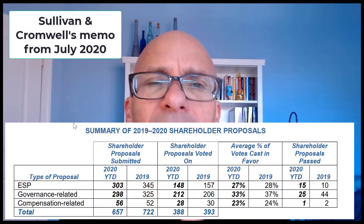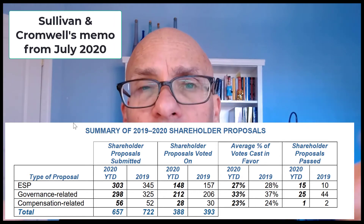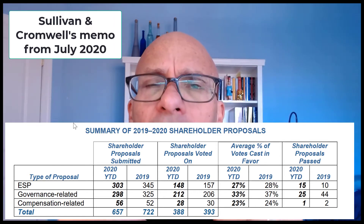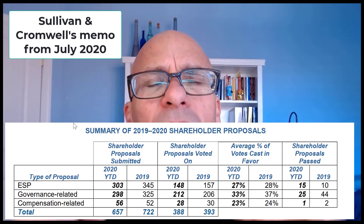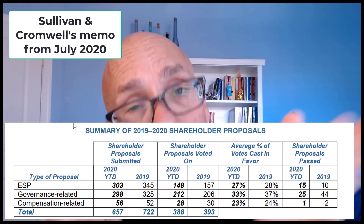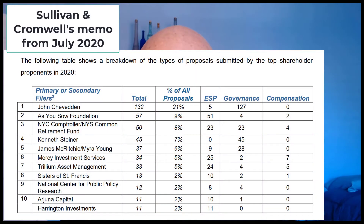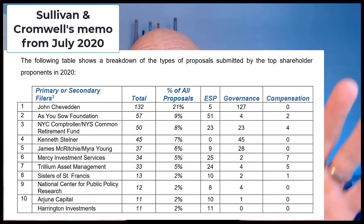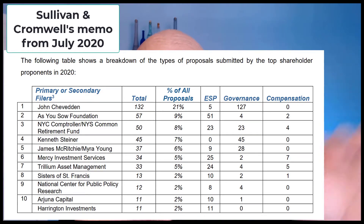In recent years, about half of the proposals are E&S-related — environment and social — and they tend to be submitted by institutional investors or groups of institutional investors. The other half are governance-related, tending to be submitted by a fairly small cottage industry of individuals who submit proposals year in and year out. There are also typically a half-dozen proposals related to executive compensation. Here's a chart from a Sullivan and Cromwell memo illustrating how the three most prolific proponents and their families are responsible for submitting nearly one-third of all proposals.